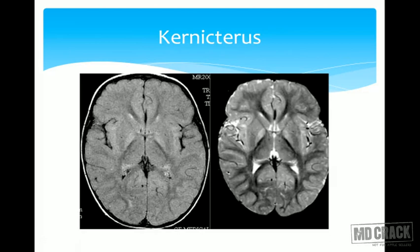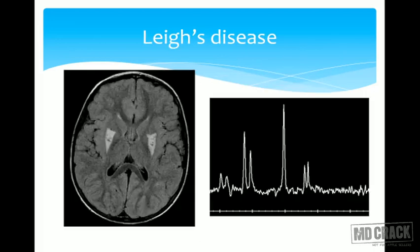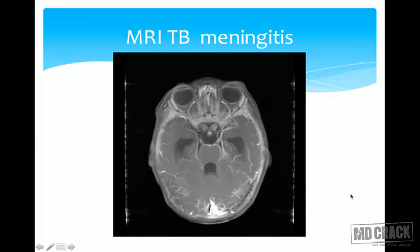Kernicterus shows bilateral basal ganglia abnormalities — seen here in a child with elevated bilirubin at three months. Leigh's disease, another metabolic disorder, shows T2 hyperintensity within the putamen. MR spectroscopy provides a graph of metabolites that helps determine the disease process.